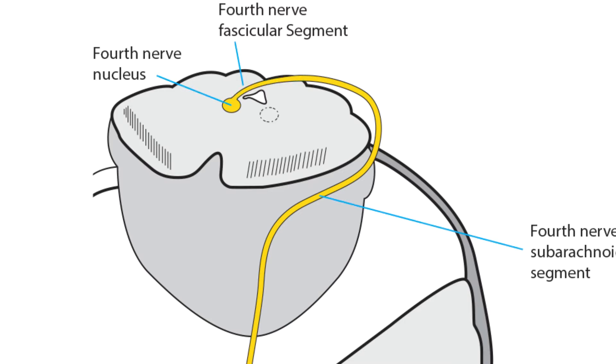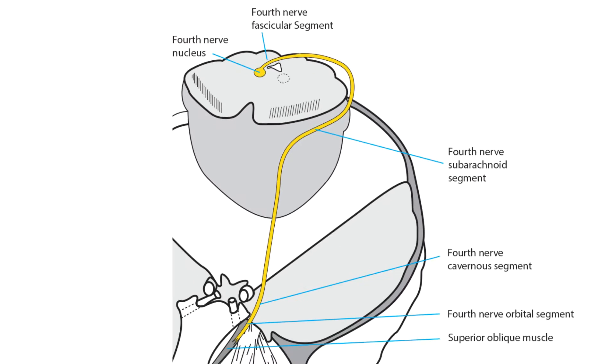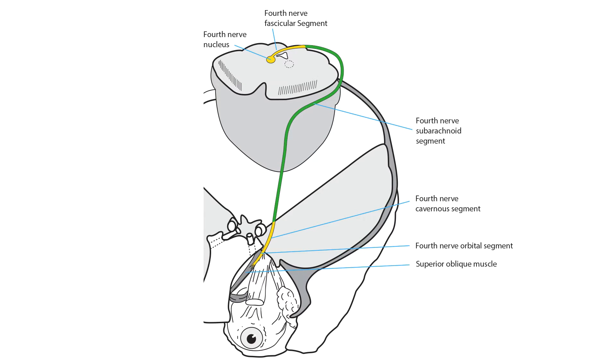Its fascicles proceed dorsally and cross so that the right fascicles become the left nerve and the left fascicles become the right nerve. The fascicles exit the brainstem in the anterior medullary vellum and travel in the subarachnoid space along the inner margin of the tentorium cerebelli.